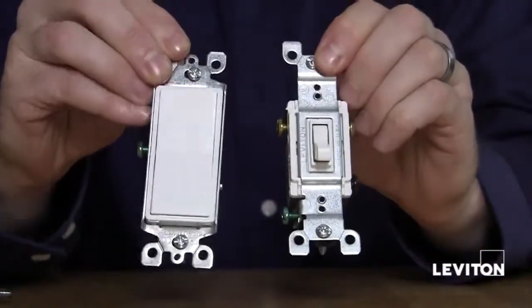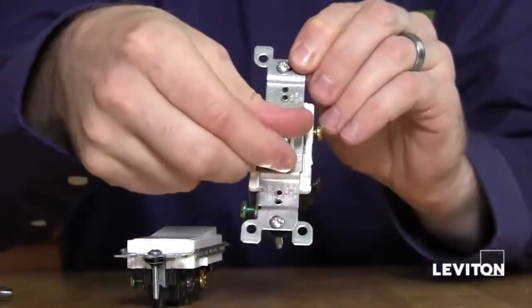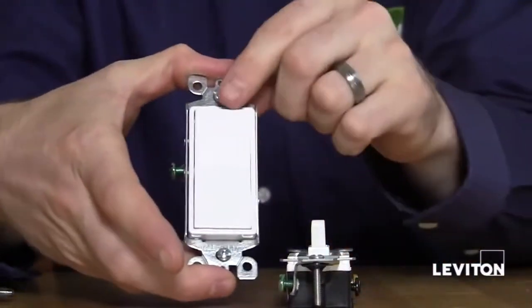Here are two examples of a three-way switch. One is a toggle and the other is a decora style.